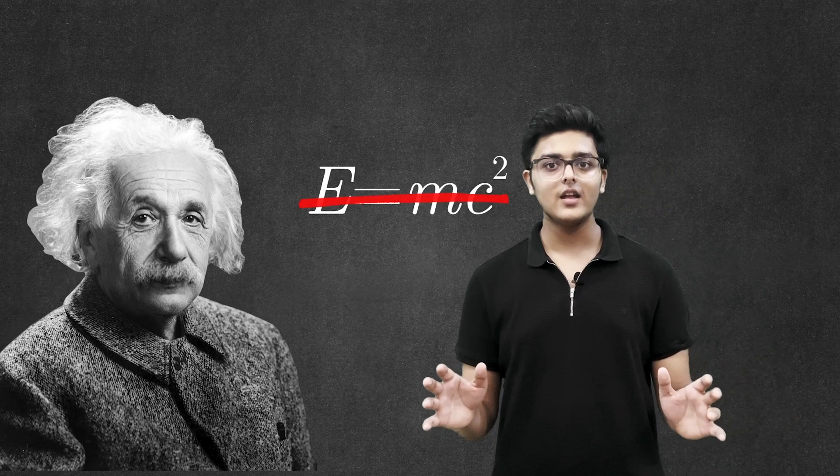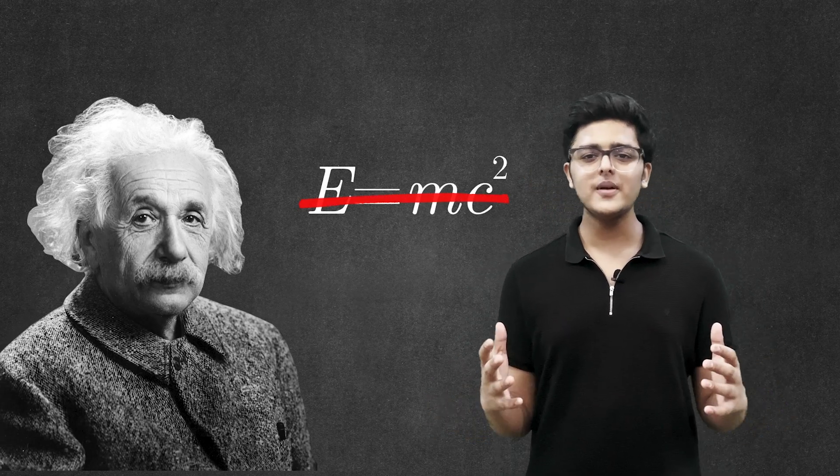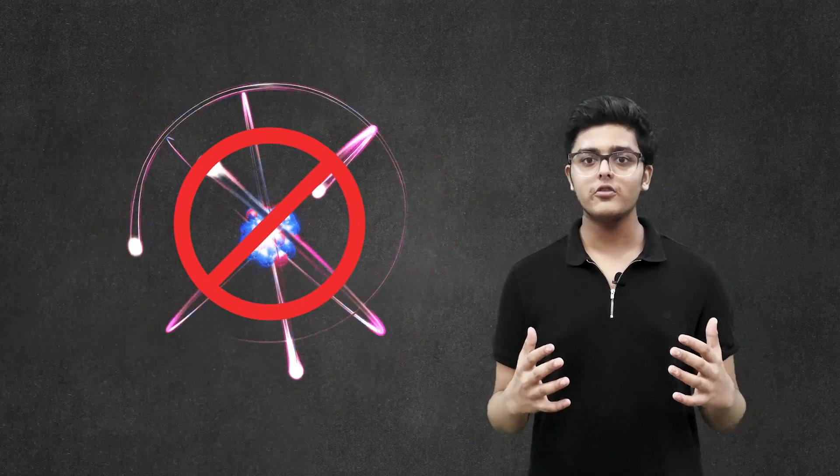Now another limitation of the Schrödinger's equation is that it does not consider Einstein's theory of relativity, making it outdated for high-speed particles and massless particles like photons.